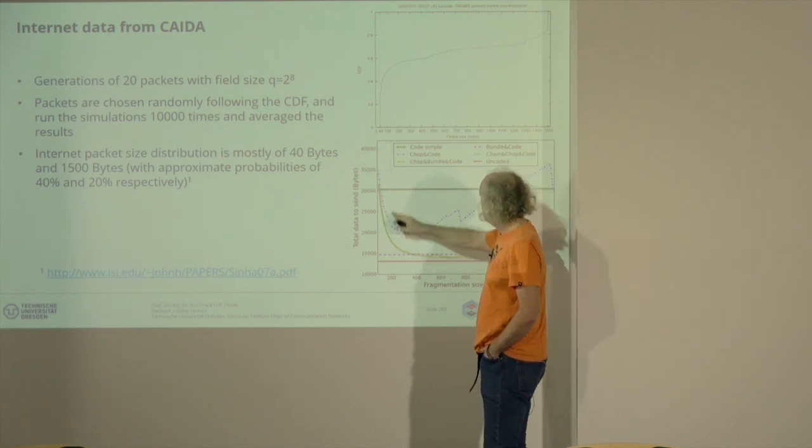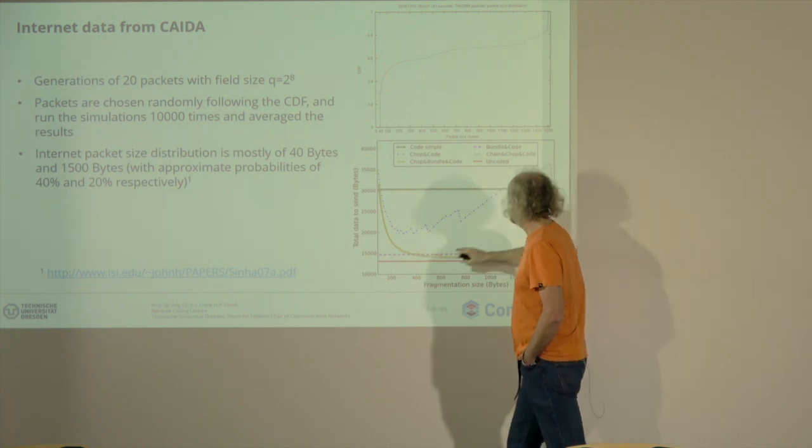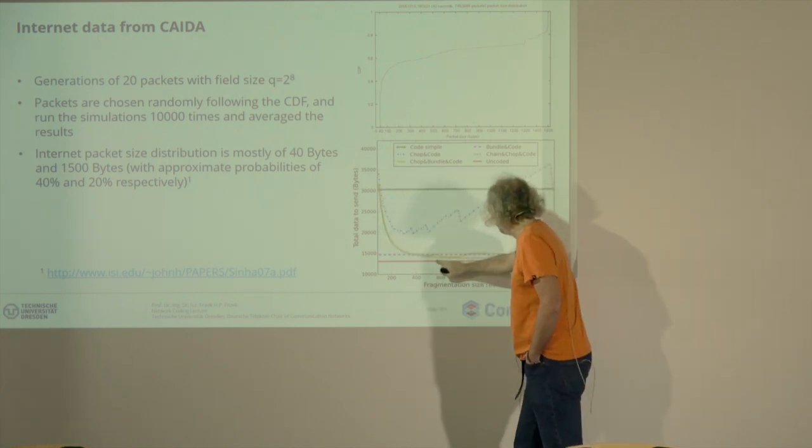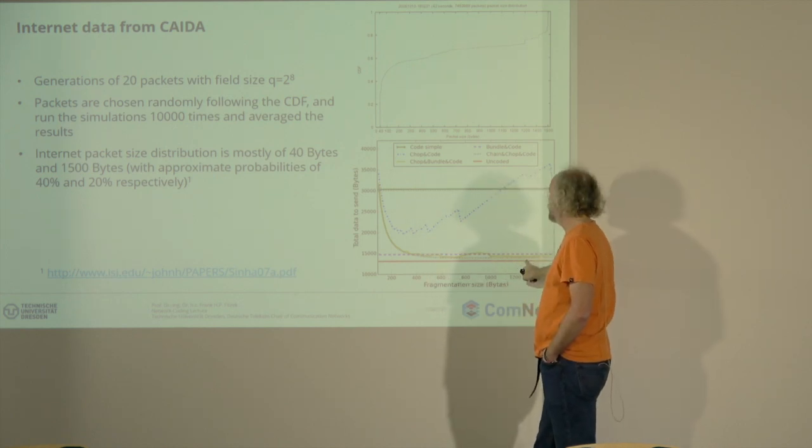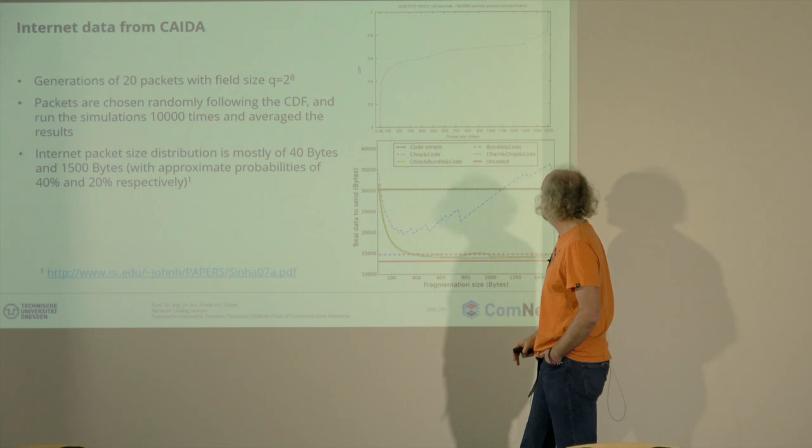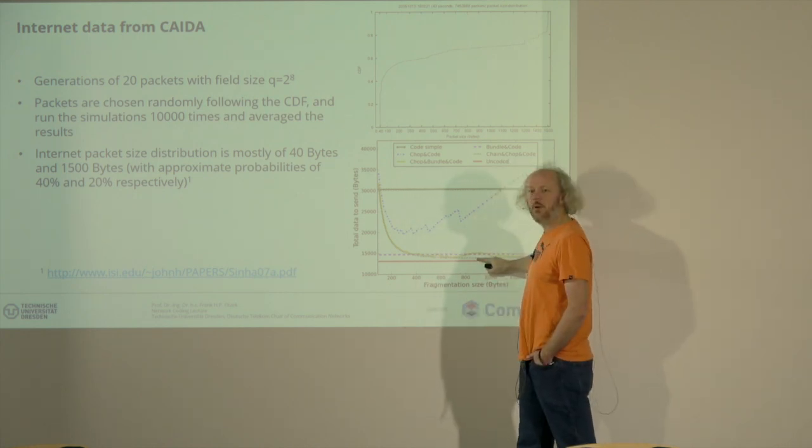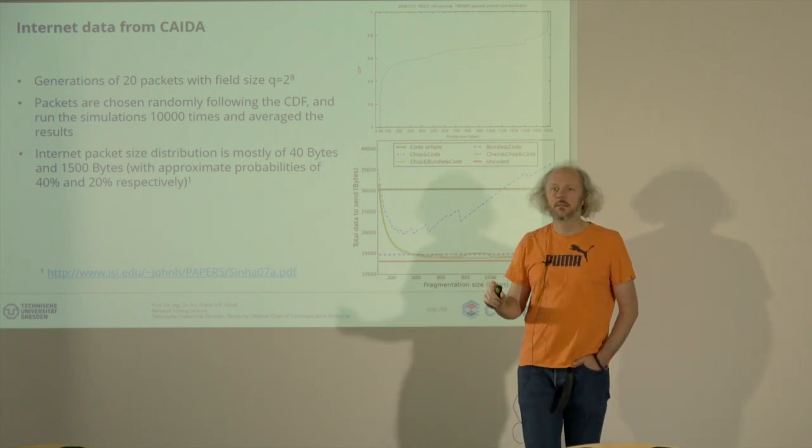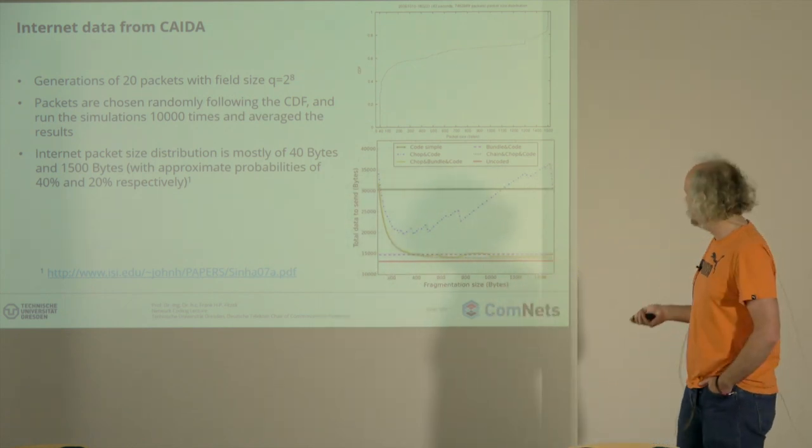Then you have the yellow one down here. The chain chop encode is similar to that, it looks very good down here as well, and it really approaches also the limit of the uncoded case. Still you see there's a small delta, and this delta comes from the encoding vector, it's not the padding or whatever. So there is something what you can do.